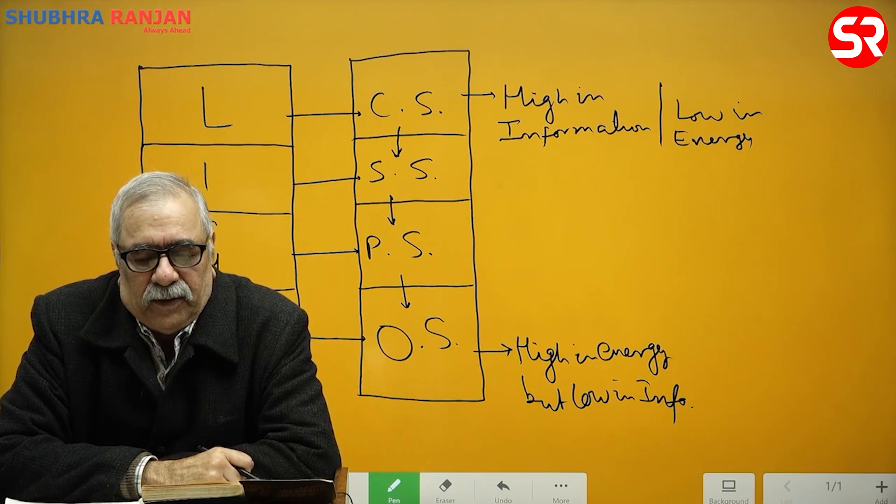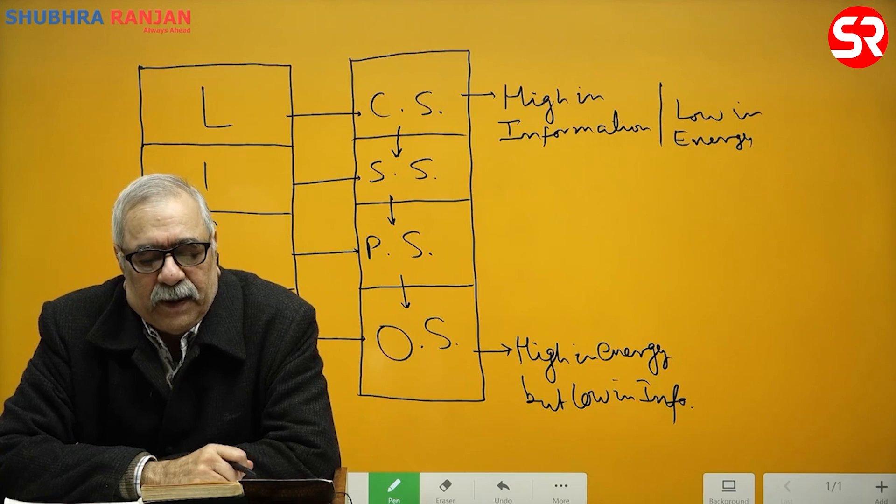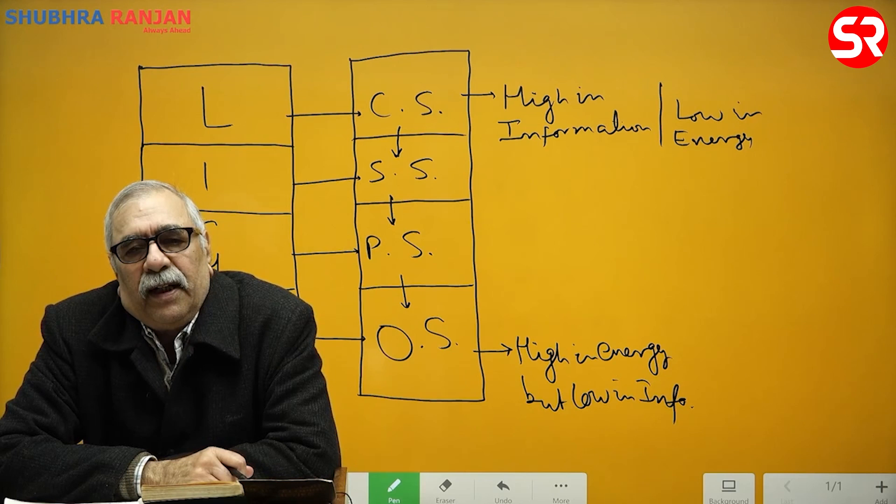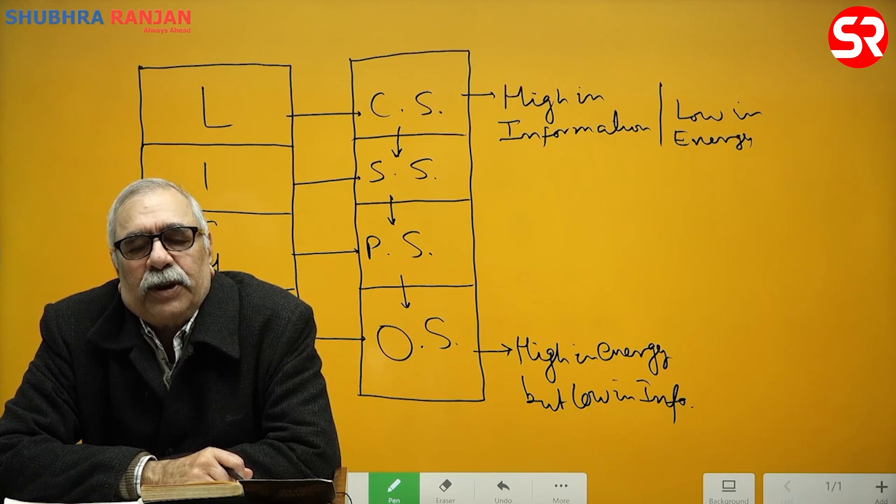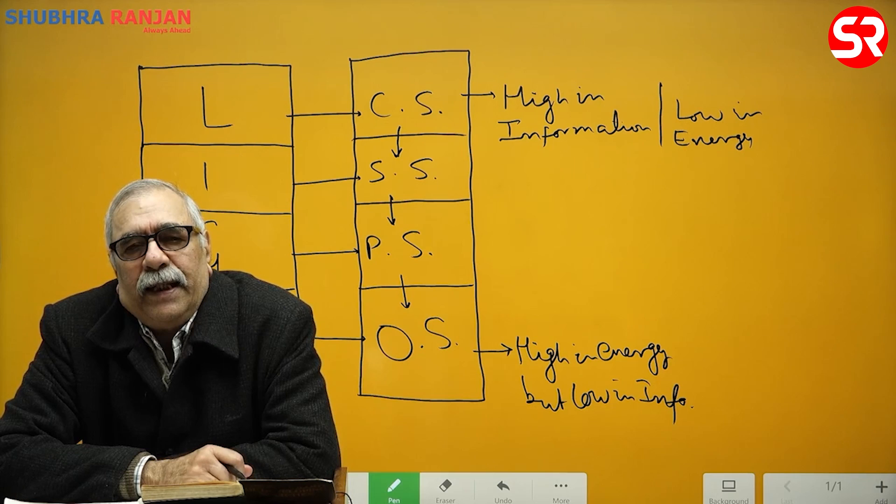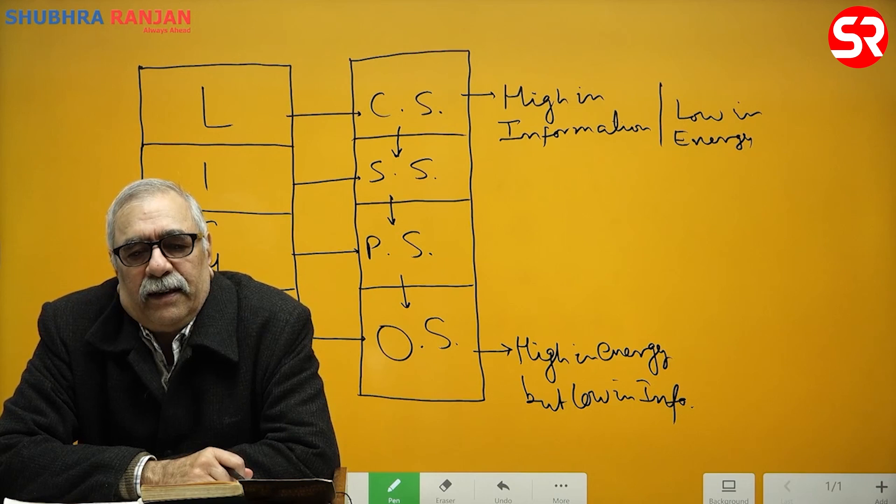Now Parsons says that this shows there is interdependence between energy and information in the system. In fact, social life consists of two dimensions: energy and information, and the two are interdependent, where the information controls the energy.